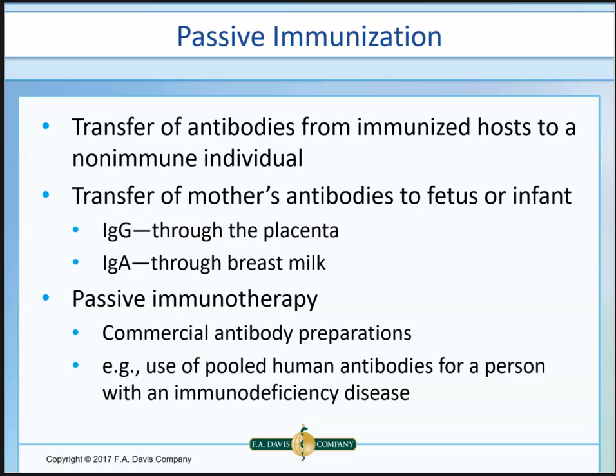The second form of passive immunization is passive immunotherapy — commercially prepared antibodies using pooled amounts of human antibodies. A good example from COVID: people who recovered from COVID had their plasma collected, their antibodies pooled, and given to patients who had not developed antibodies. These are ready-made, already-prepared antibodies.